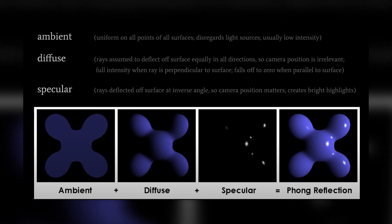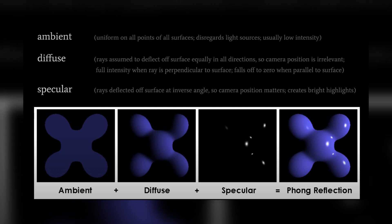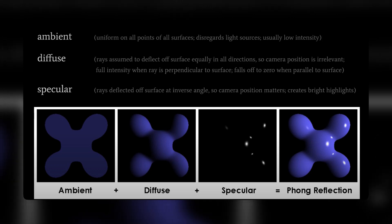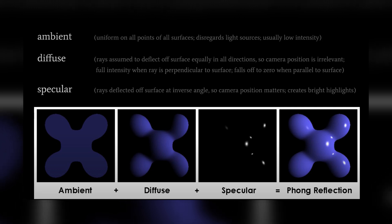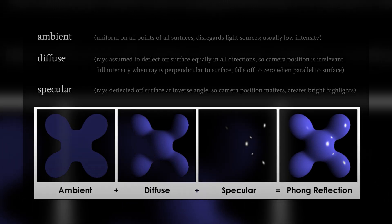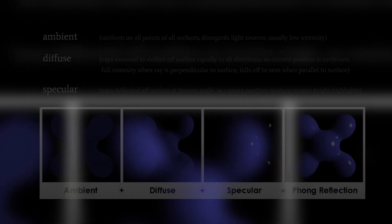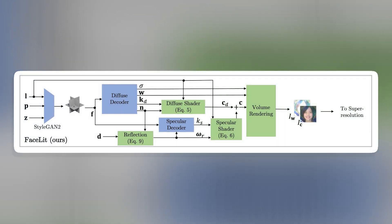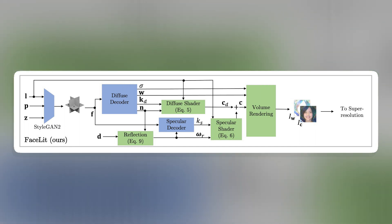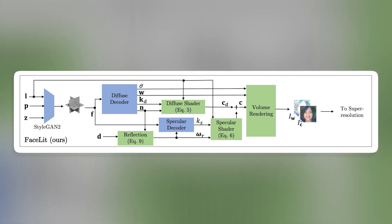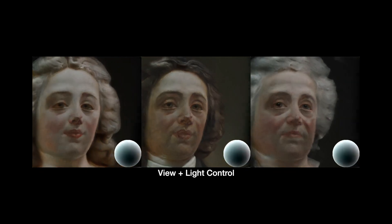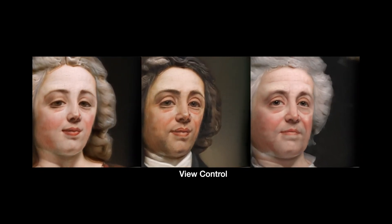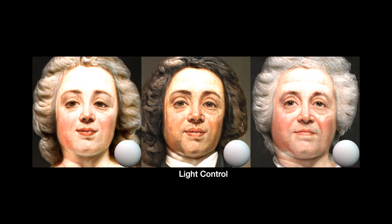The rendering process involves ray tracing, which is a technique that simulates how light rays interact with objects in a scene. Facelit uses ray tracing to sample the neural volume along each pixel ray and compute its color and opacity using the Phong reflectance model. Facelit trains its neural networks using several loss functions, including reconstruction loss, perceptual loss, adversarial loss, consistency loss, and regularization loss. These loss functions ensure that the generated face images are realistic and diverse, but also consistent across different lighting conditions and viewpoints.